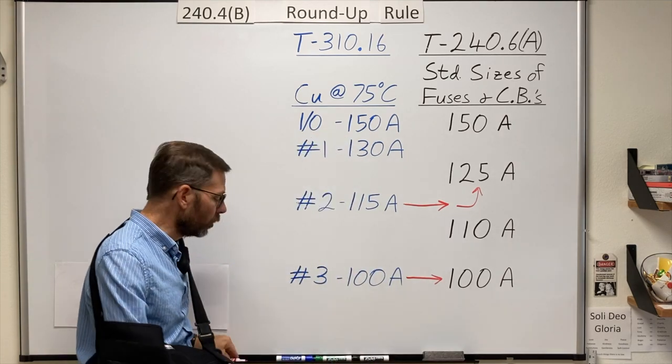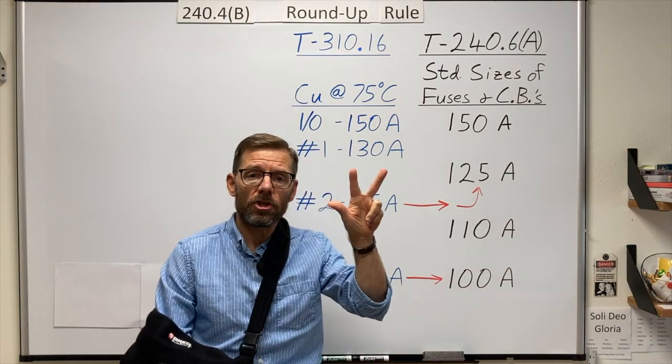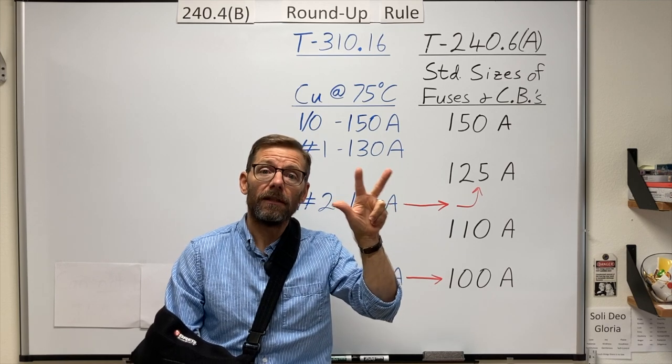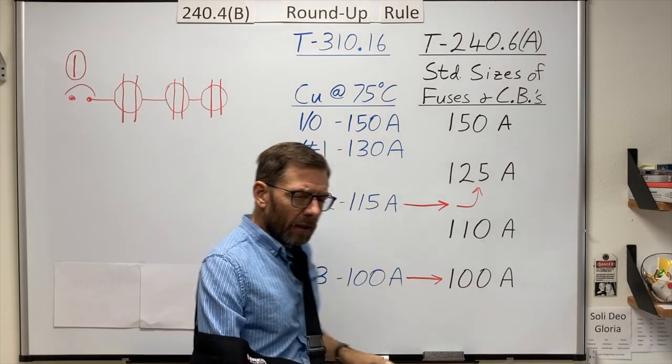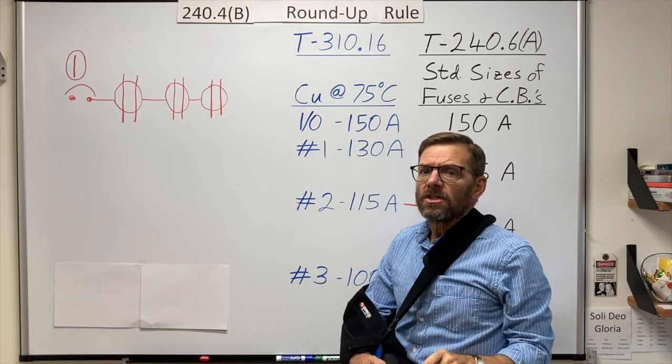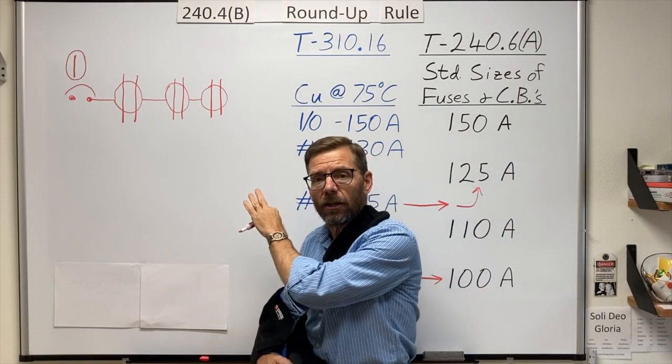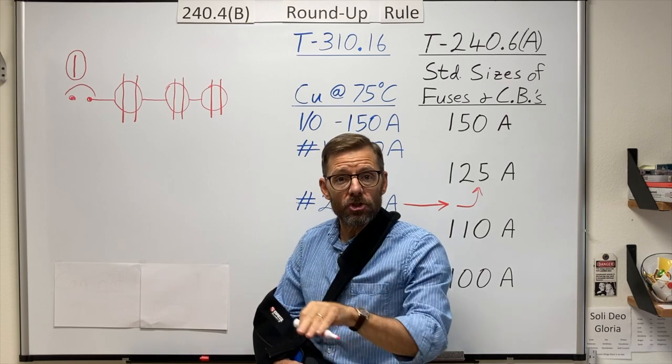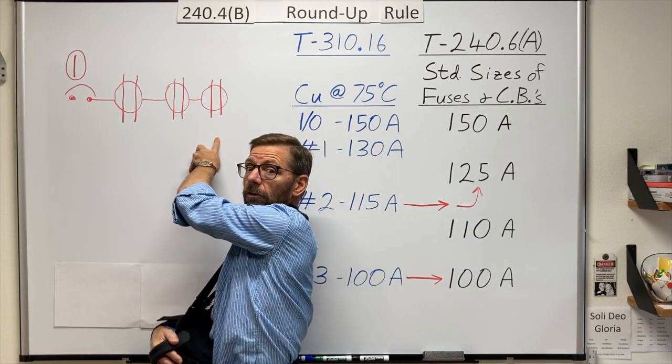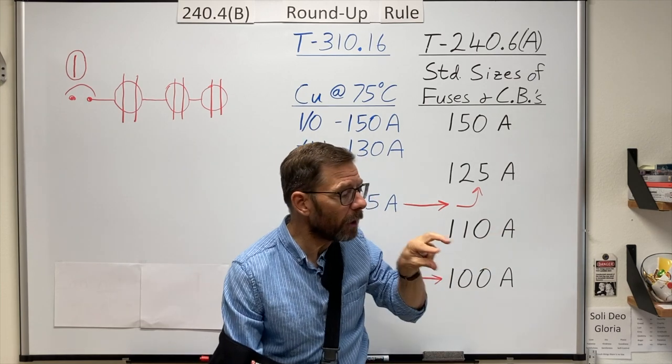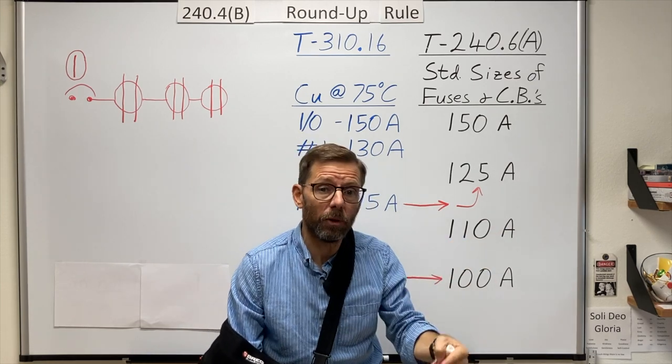Now, to use this rule, there are three conditions. And all three need to be met. Condition number one states that if the conductor is being used as a branch circuit for multiple receptacles, for cord and plug connected portable loads,